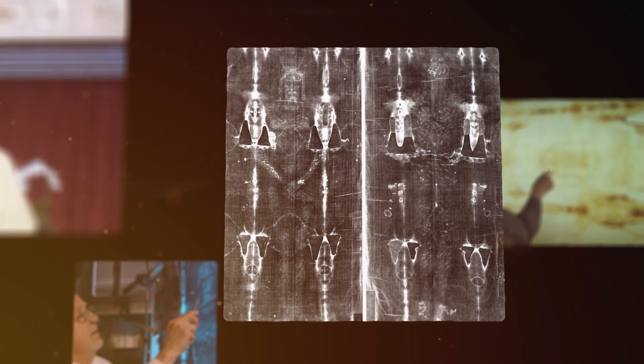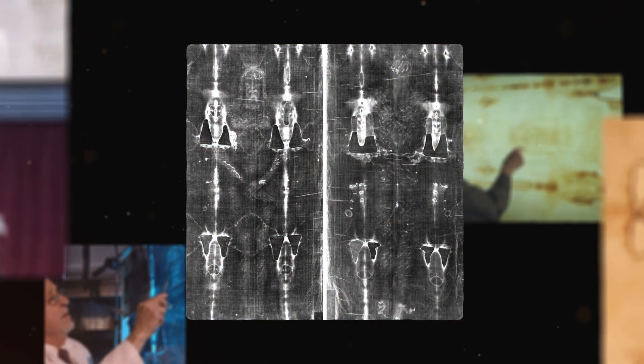A discovery scientists truly can't explain. The machine uncovered an impossible code in the fibers, a signature that not only defies the official story but points to a technology that shouldn't even exist.